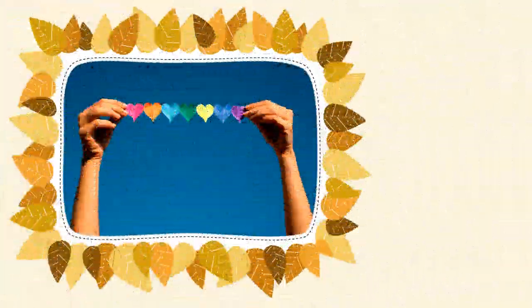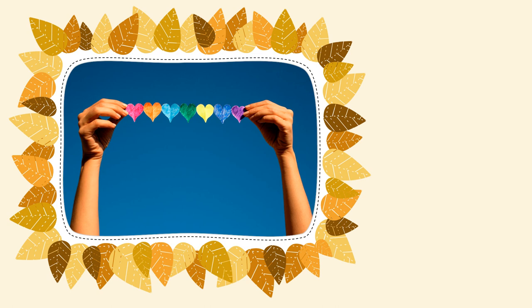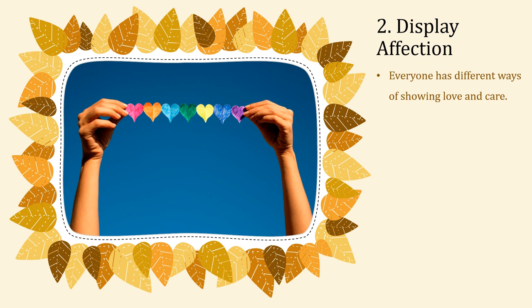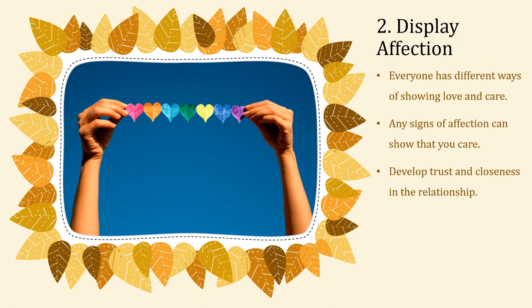The second factor which contributes to healthy family relationships is displaying affection. Everyone has a different way of showing love and care. Any sign of affection — for example, hugs, kisses, a pat on the back, a high-five, smiles, or words of encouragement — shows that you care, and this helps to develop trust and closeness in the relationship. It is especially important when one goes through difficult times, for example going through illness or loss of someone dear.